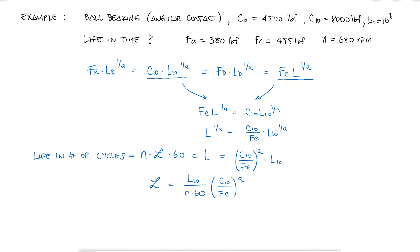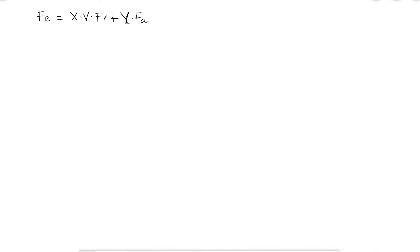This means that to find the life, I first need to find the equivalent load FE. I know that there's two options here. If the axial load is low enough, it can be negligible, and I know this happens when FA over VFR is lower than the value E, but at the same time E is given by the FA over C0 value. So I'll start there.